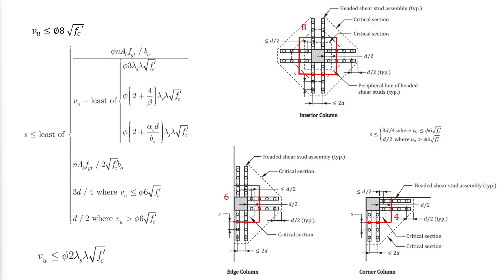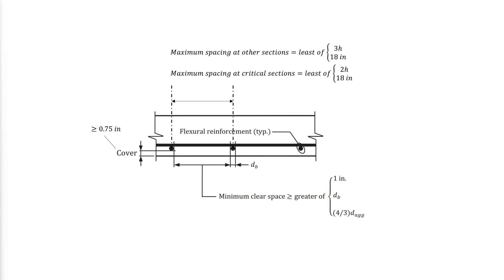The minimum yield strength of shear studs required according to ACI is 51,000 psi. The following minimum and maximum spacing requirements as well as the minimum cover of reinforcements should be met, where DAGG is the nominal maximum aggregate size used in the concrete mixture.